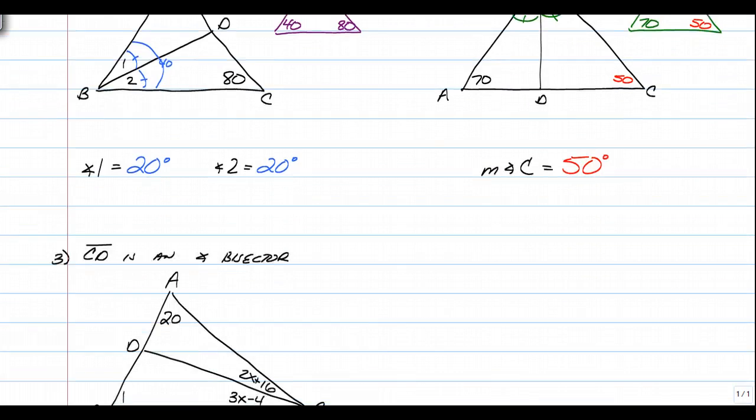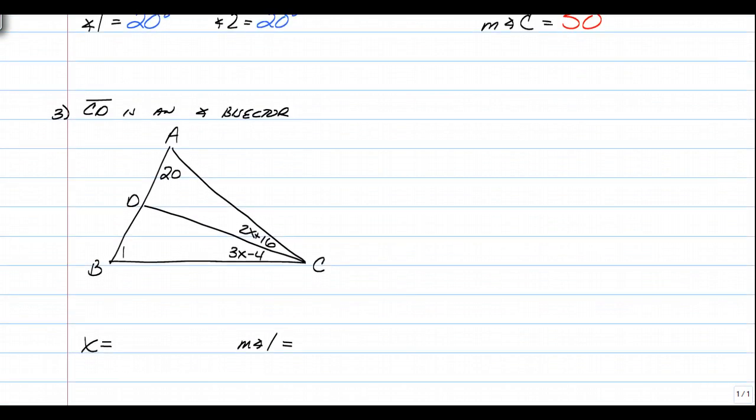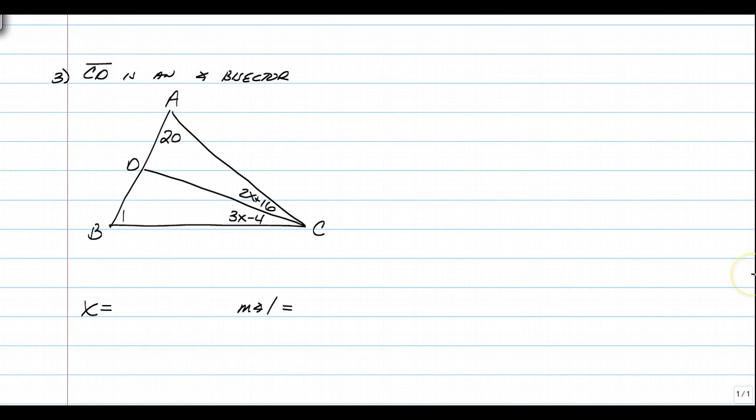Last example throws algebra into the picture. So CD is an angle bisector. So we have these two angles. Again, CD cuts angle ACB in half, so these two are going to be equal again. So what we're going to do here is first set our two equations equal to each other. So we have 2X plus 16 is equal to 3X minus 4, which means X is equal to 20.